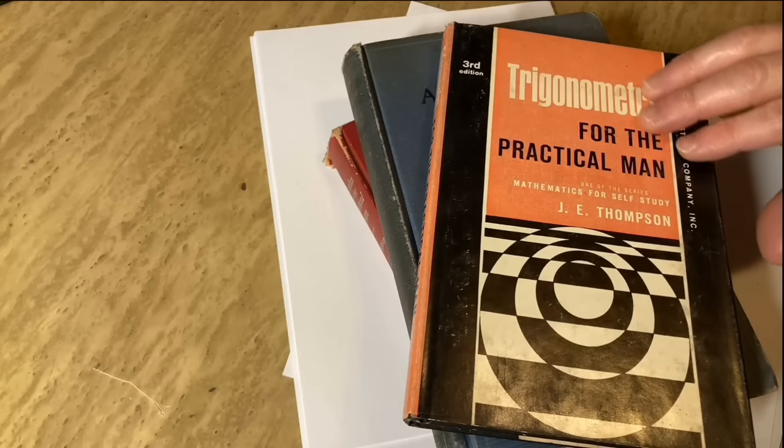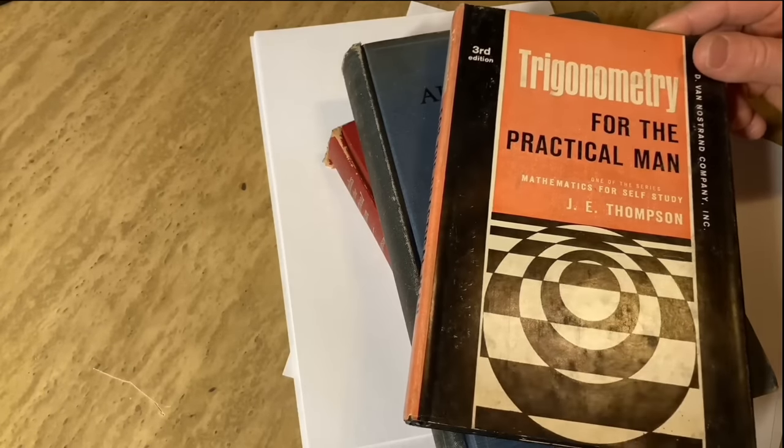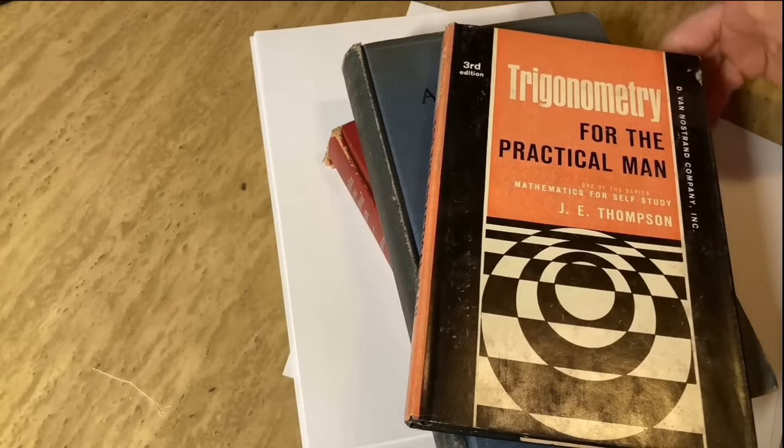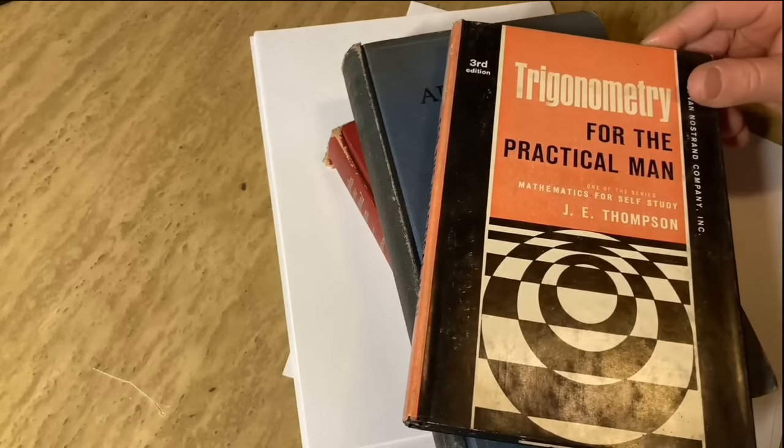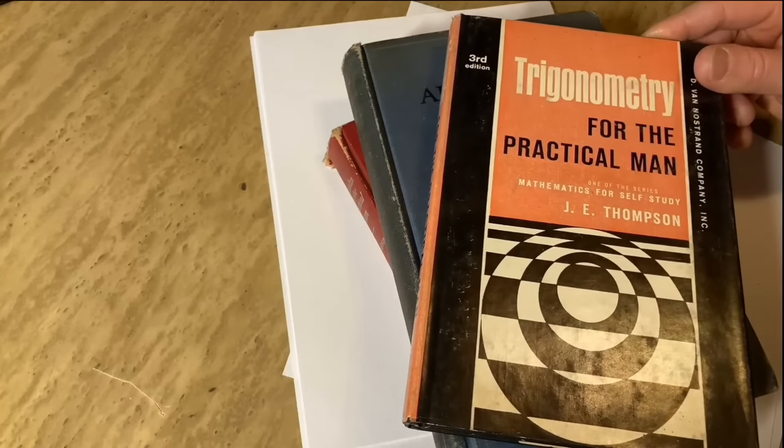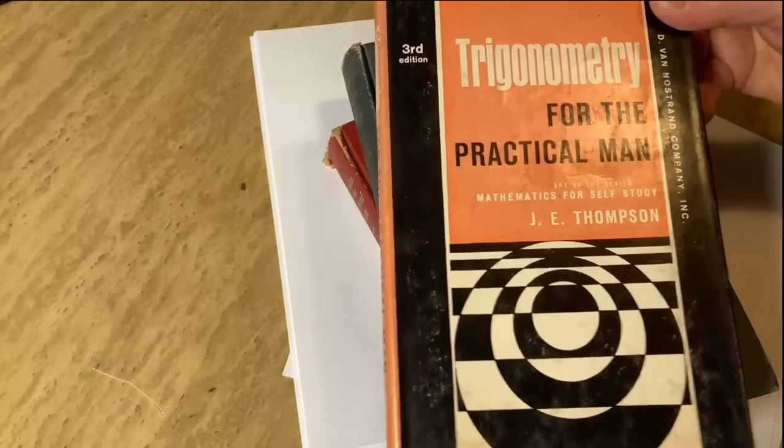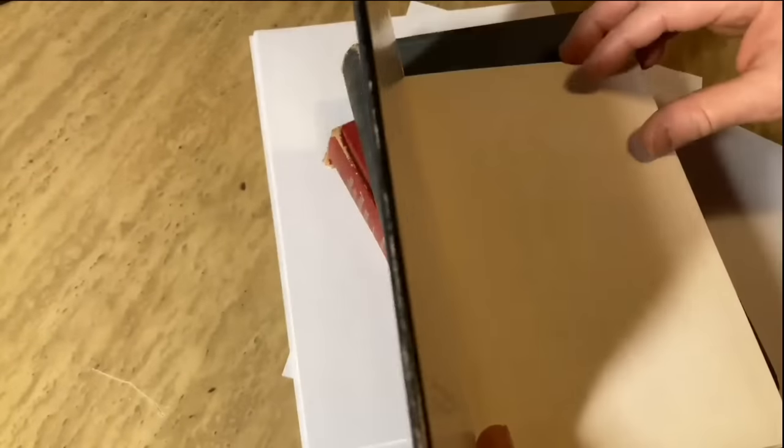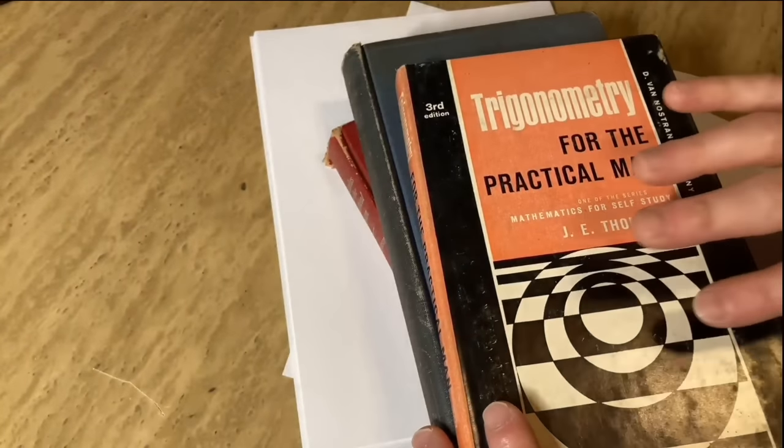So he picked up this one, and he really didn't think it was that interesting. For some reason, he really didn't find it appealing. It's called Trigonometry for the Practical Man. It's written by J.E. Thompson, and we'll come back and we'll take a look at this book in a minute.